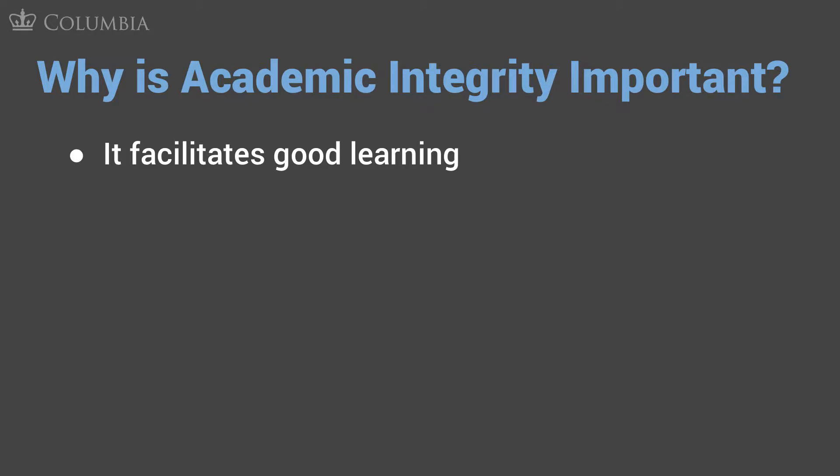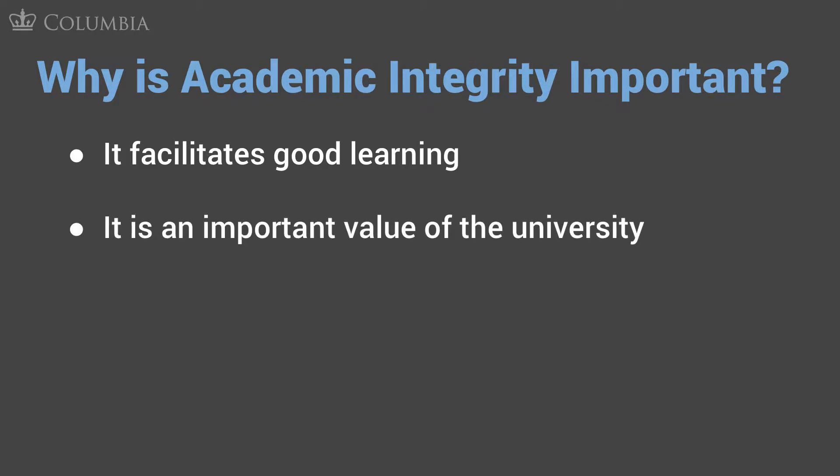Second, academic integrity is an expression of the values of the university. Remember, the university is based on collaboration, production of knowledge, and sharing of knowledge. People generate intellectual property and then they share it with each other in the interest of generating new additional knowledge. But in order for that to work in a collaborative and ethical way, people need to get credit for the work that they've done and their own intellectual property.